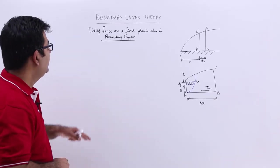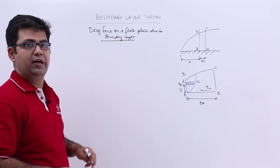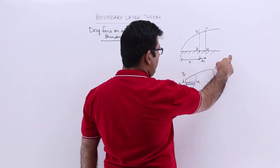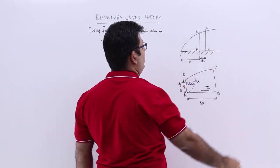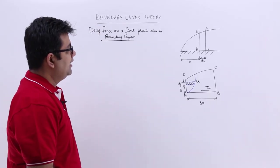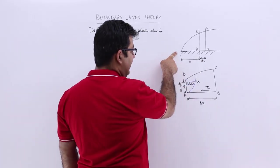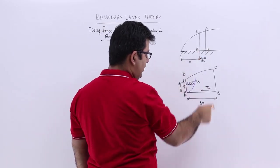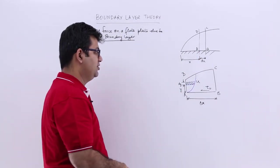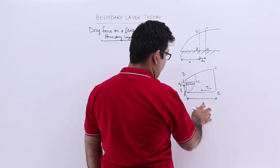Let's talk about the drag force on a flat plate in a boundary layer. So let us say this is the flat plate and this is the flow over it. At a distance x from the leading edge we assume a small length dx.